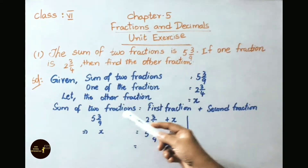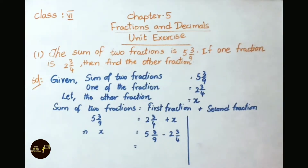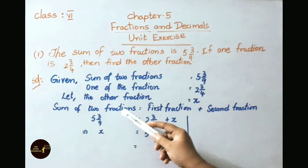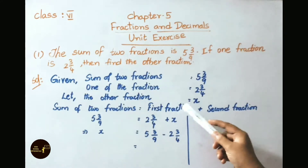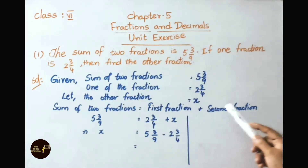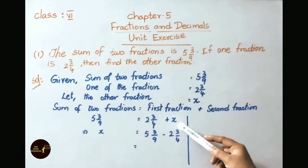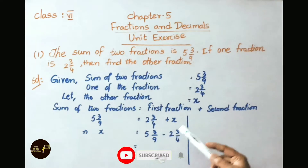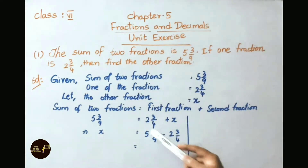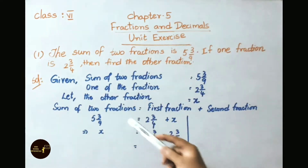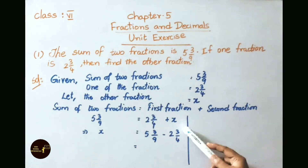We know sum of two fractions equals first fraction plus second fraction. So 5 and 3 by 9 equals 2 and 3 by 4 plus x. Therefore x equals 5 and 3 by 9 minus 2 and 3 by 4.